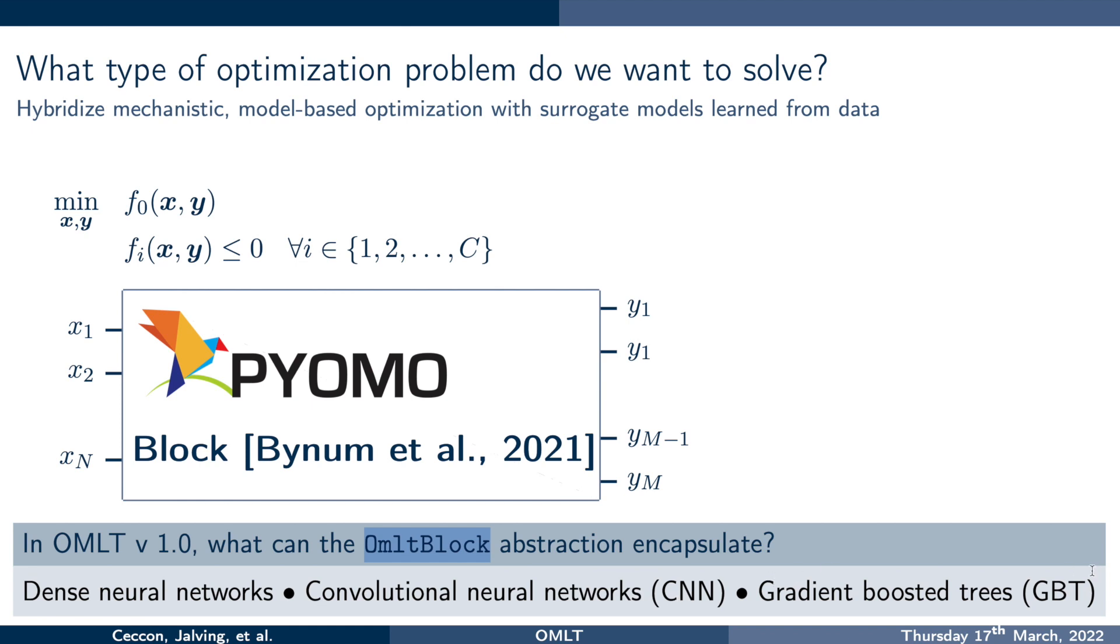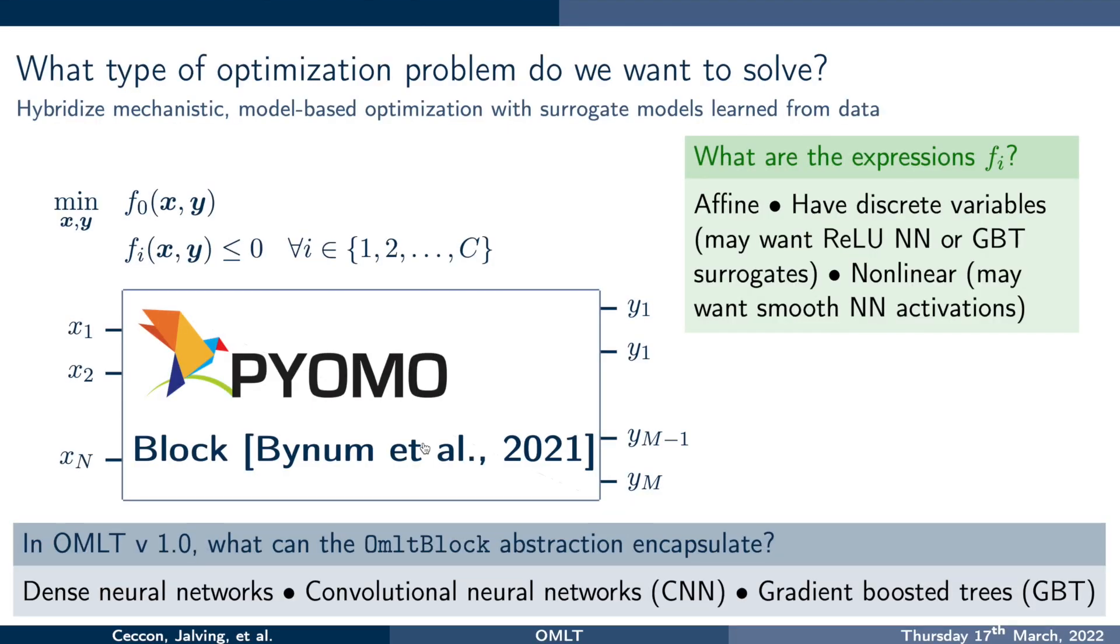Basically what the Pyomo block abstraction allows you to do is hide, if you wish, all of the constraints or all of the new variables that are introduced within a block. The reason that these Pyomo blocks are very useful inside of Omelette is that we are particularly using an extension of the block abstraction that we call an omelet block abstraction to hide dense neural networks, convolutional neural networks, and gradient boosted trees. So basically what happens is that the constraints and the variables that represent dense neural networks, convolutional neural networks, and the gradient boosted trees are going to be hidden inside of this Pyomo block.